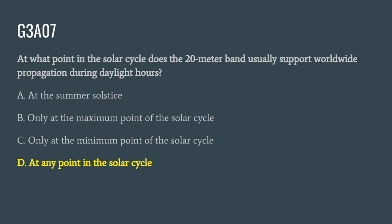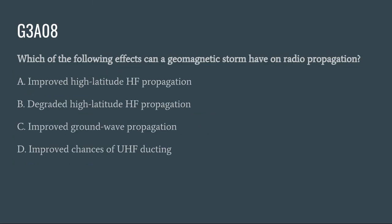G3A08: Which of the following effects can a geomagnetic storm have on radio propagation? A. Improved high latitude HF propagation. B. Degraded high latitude HF propagation. C. Improved ground wave propagation. Or D. Improved chances of UHF ducting. The correct answer is B: degraded high latitude HF propagation.